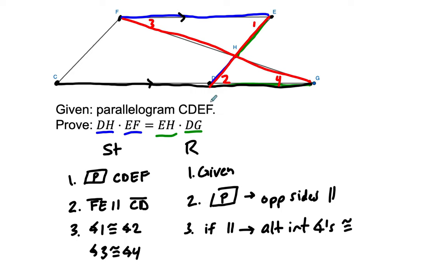So angle one is congruent to angle two. And let's say angle three is congruent to angle four. Why is this? Well, if you have parallel lines, then alternate interior angles are congruent. Okay, well, what does that mean? Well, look at this, we have two pairs. So one and two, and then three and four are two pairs of congruent angles. So we have similar triangles. So the top triangle, we'll say HEF is similar to triangle H, so one and two corresponds to HDG. And well, why do we know that? Well, we have angle angle, if we have two pairs of congruent angles, then we have similarity.